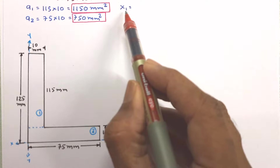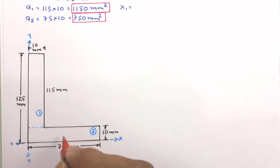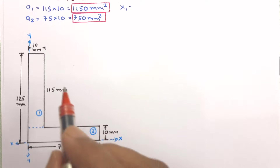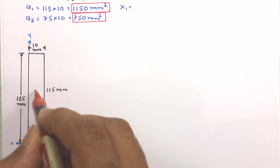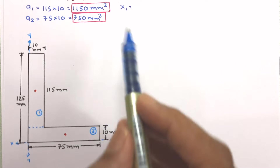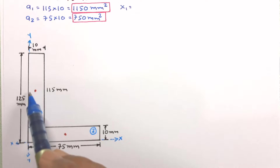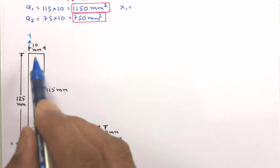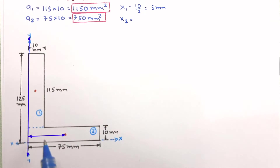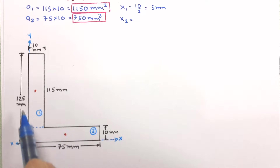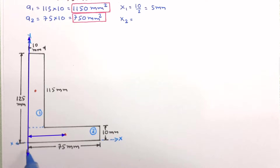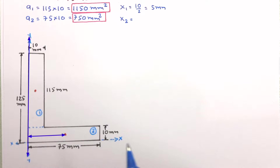Let us mark the centroid of both figures. x1 is the distance of the centroid of the first figure from the reference YY axis, which is half of 10 mm, so x1 = 5 mm. x2 is the distance of the centroid of the second figure from the reference YY axis. The length of the second rectangle is 75 mm and the centroid is at half of that, so x2 = 37.5 mm.